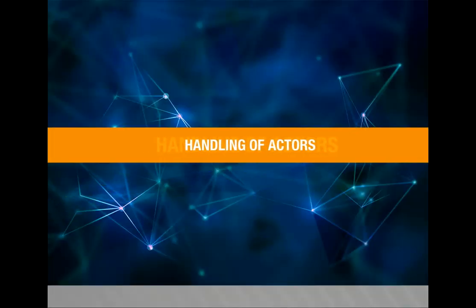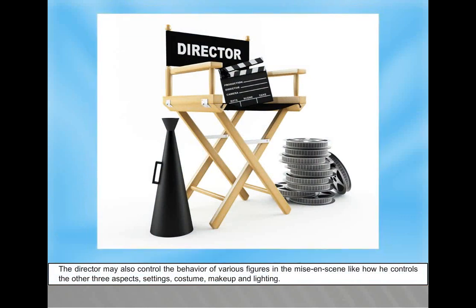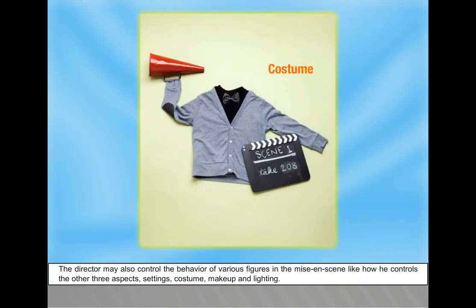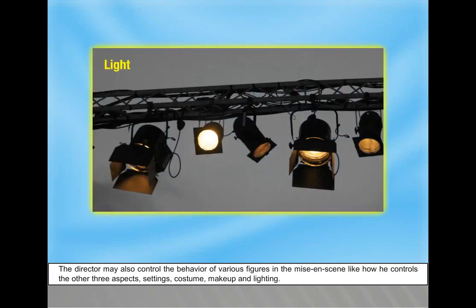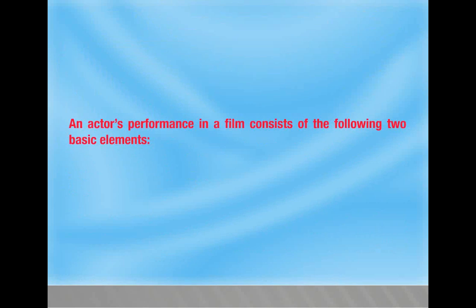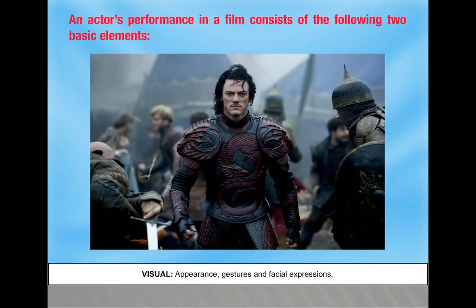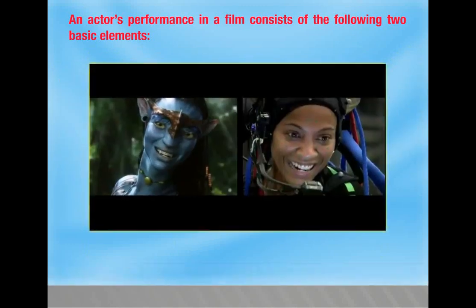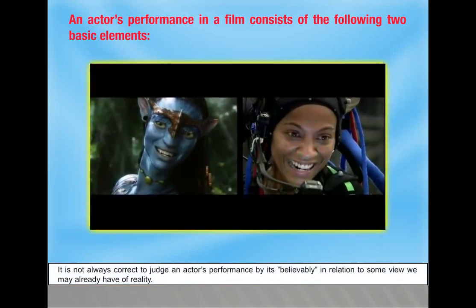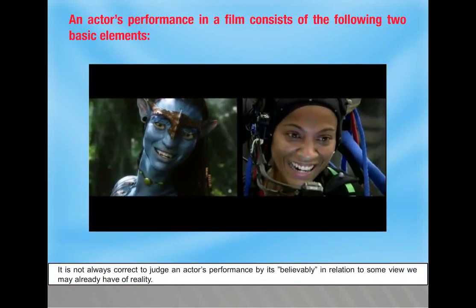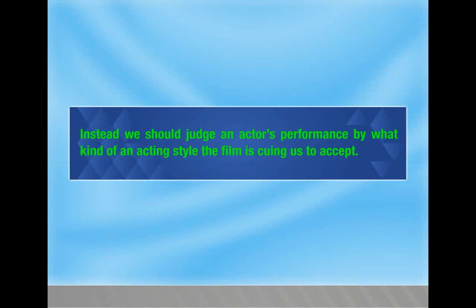The director may also control the behavior of various figures in the Mise-en-scène — settings, costume, makeup, and lighting. An actor's performance consists of two basic elements: visual (appearance, gestures, and facial expressions) and sound (voice, diction, pronunciation, and modulation). It is not always correct to judge an actor's performance by its believability in relation to our view of reality. Instead, we should judge performance by what acting style the film is cueing us to accept.